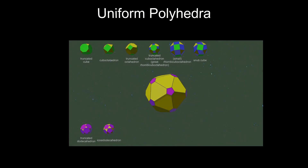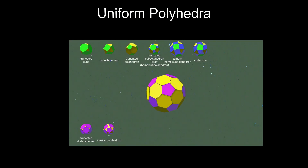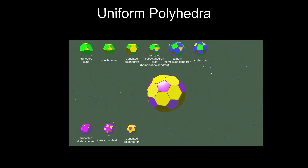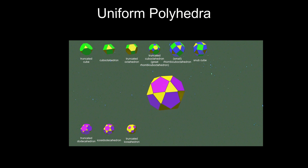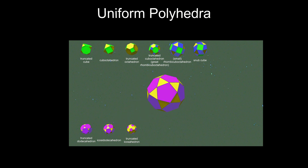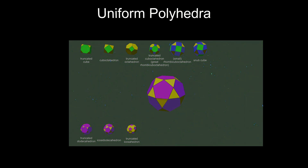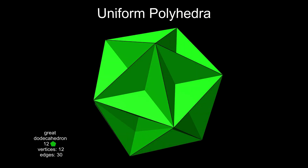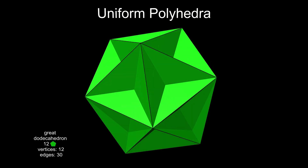As shown in an earlier video, each platonic solid can be modified in various ways to produce different Archimedean solids. The same operations can be done on the Kepler-Poinsot solids to create concave uniform polyhedra.